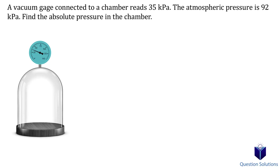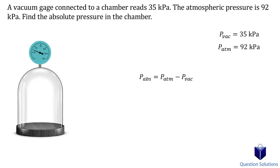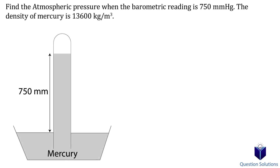In this question, a vacuum gauge connected to a chamber reads 35 kilopascals, and atmospheric pressure is 92 kilopascals. We need to find the absolute pressure in the chamber. Using the vacuum pressure equation, we subtract the vacuum gauge reading from the atmospheric pressure: 92 − 35 = 57 kilopascals. So the absolute pressure in the chamber is 57 kilopascals.